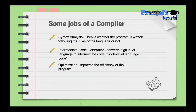The second job is intermediate code generation. In the compiler, intermediate code generation produces a middle level language code. This sits between the source code and the object code, reducing complexity.